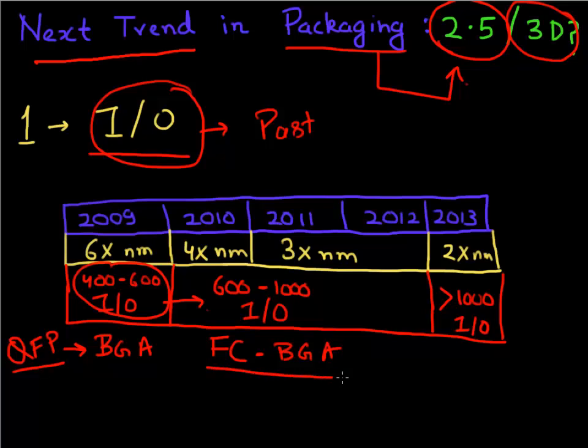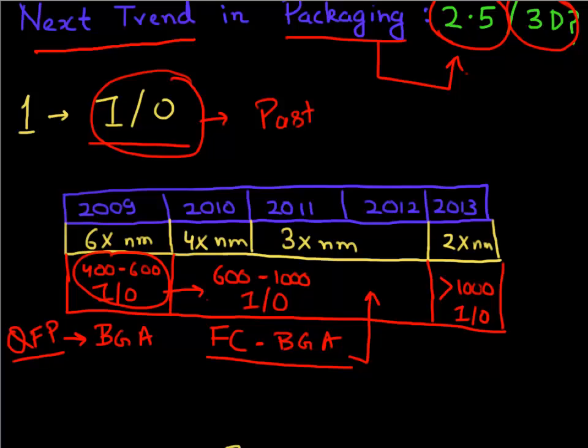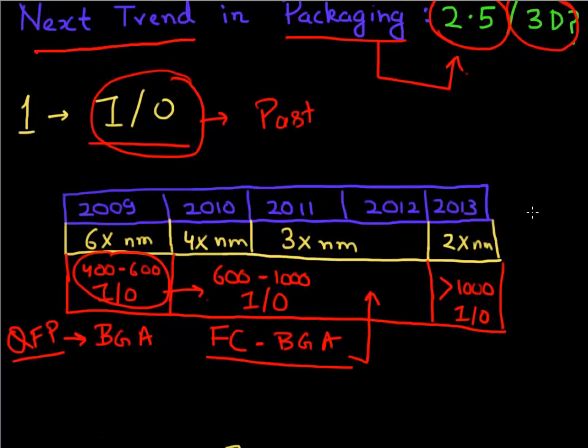This flip-chip ball grid array package can support up to 1,000 input output connections, roughly in the range of 1,000 to 1,500 I/O connections per chip. But increasingly as we are adding more and more functionality into one single chip, it requires more than the number of I/Os which can be supported by this flip-chip packaging. So that requires going to this next evolution in terms of chip packaging.